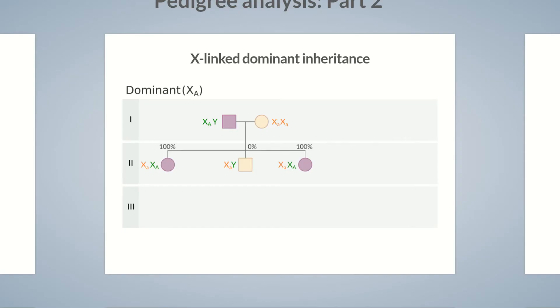However, if the mother is an affected heterozygote with the genotype big A, little a, then all offspring have a 50% chance of inheriting the big A allele and being affected. If the mother possesses the genotype big A, big A, all offspring will be affected.